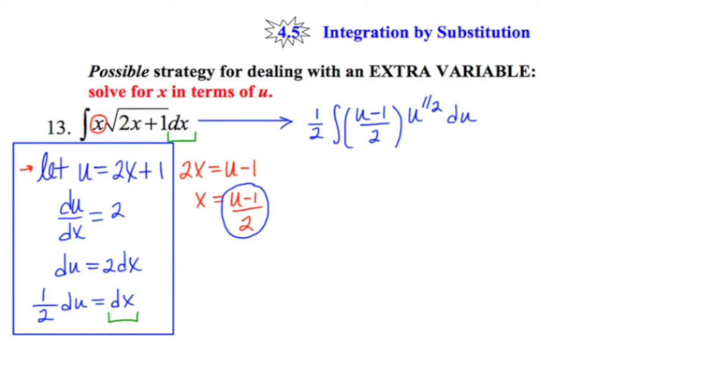Now my next maneuver is going to be to take this 2 that's in the denominator and bring it out in front, giving me a net of 1 fourth out in front. And now I'm going to distribute the u to the 1 half through to the u and then to the 1. So I'm going to end up getting u to the 3 halves minus u to the 1 half.